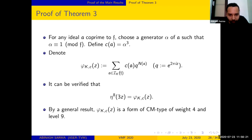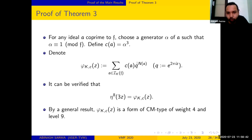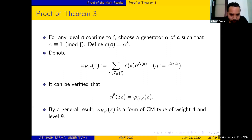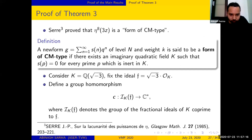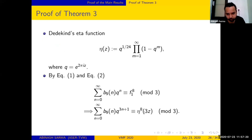To verify it is of CM type: if p is an inert prime in K = Q(sqrt(-3)), there is no ideal of norm p, because any ideal whose norm involves p as a prime factor must involve it to an even power when p is inert. Hence that coefficient vanishes. Crucially, this CM type form is exactly equal to eta^8(3z), which is precisely what we needed, since b_9(n) was related to eta^8(3z).